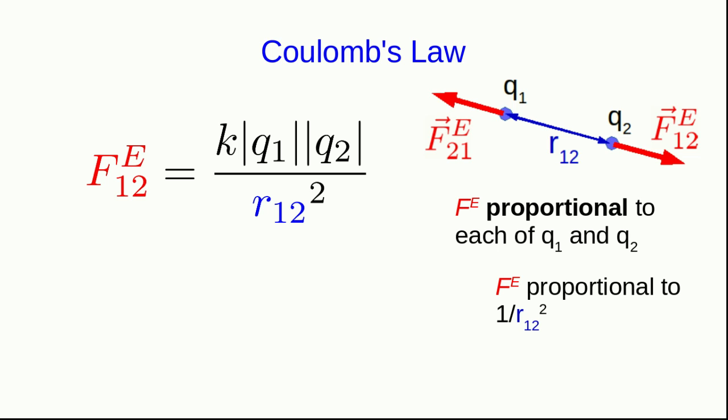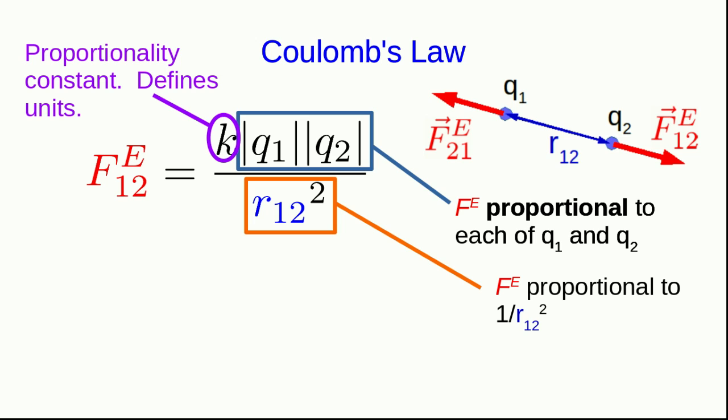Knowing the proportionalities is all we need to know to be able to write down the relationship between the electric force and these quantities that it must depend on, and so here is the relationship. If you just look at the structure of it, you can see that the electric force is proportional to both q1 and q2, and it's proportional to 1 over the distance squared. And like any proportionality, this must have a proportionality constant in front.